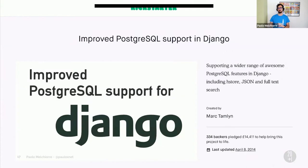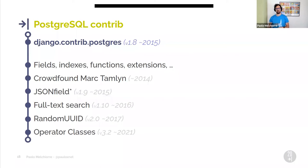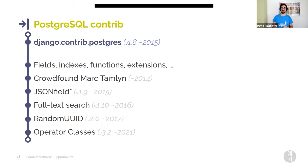In 2014, Mark Tamelin, a Django core developer, started a crowdfunding campaign to develop a module containing fields for a number of Postgres-specific data types. The campaign was successful and the new module was merged in Django 1.8. The module now contains Postgres-specific fields, indexes, functions, extensions, and more. Over the years, important features have been added, such as JSON fields, full-text search, Random UUID, and operator classes. JSON fields became usable in other supported databases only from Django 3.1, released last year — five years after being introduced in the Postgres module.